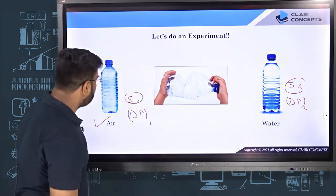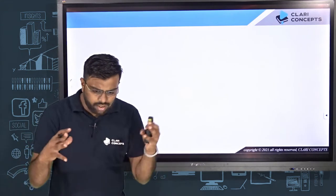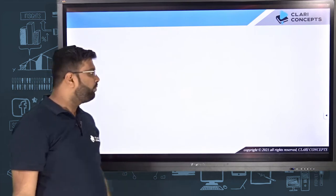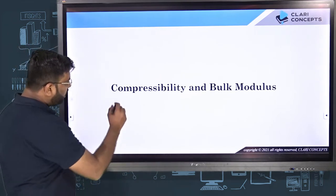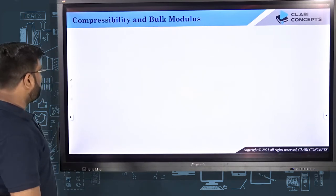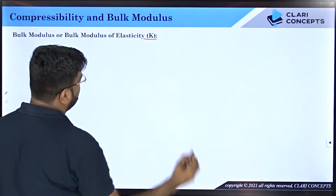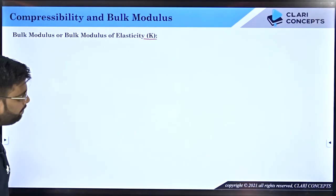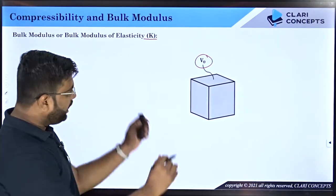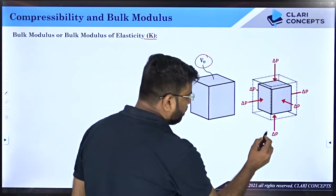There is a property which relates the change in pressure required for a particular change in volume for a particular fluid. This property is called compressibility and bulk modulus. Let us first talk about the bulk modulus, or bulk modulus of elasticity, which is represented by the symbol capital K. Let us say I have a fluid whose initial volume is V0, and I compress the fluid from all six faces by applying extra pressure delta P.